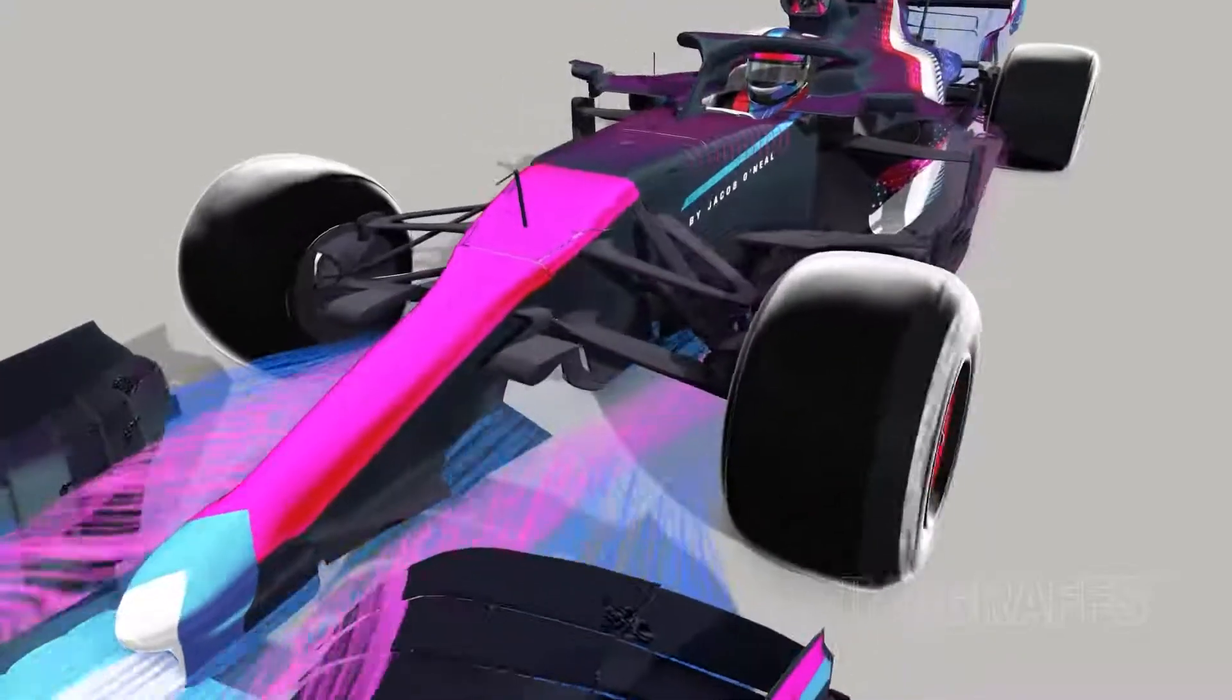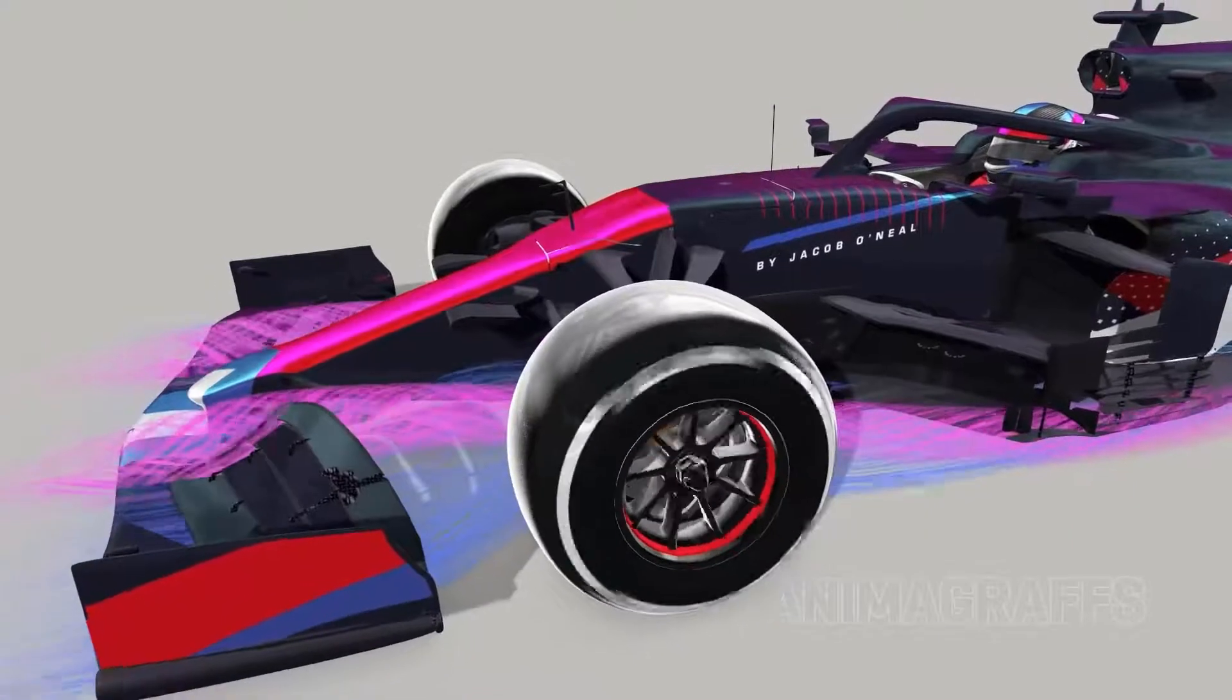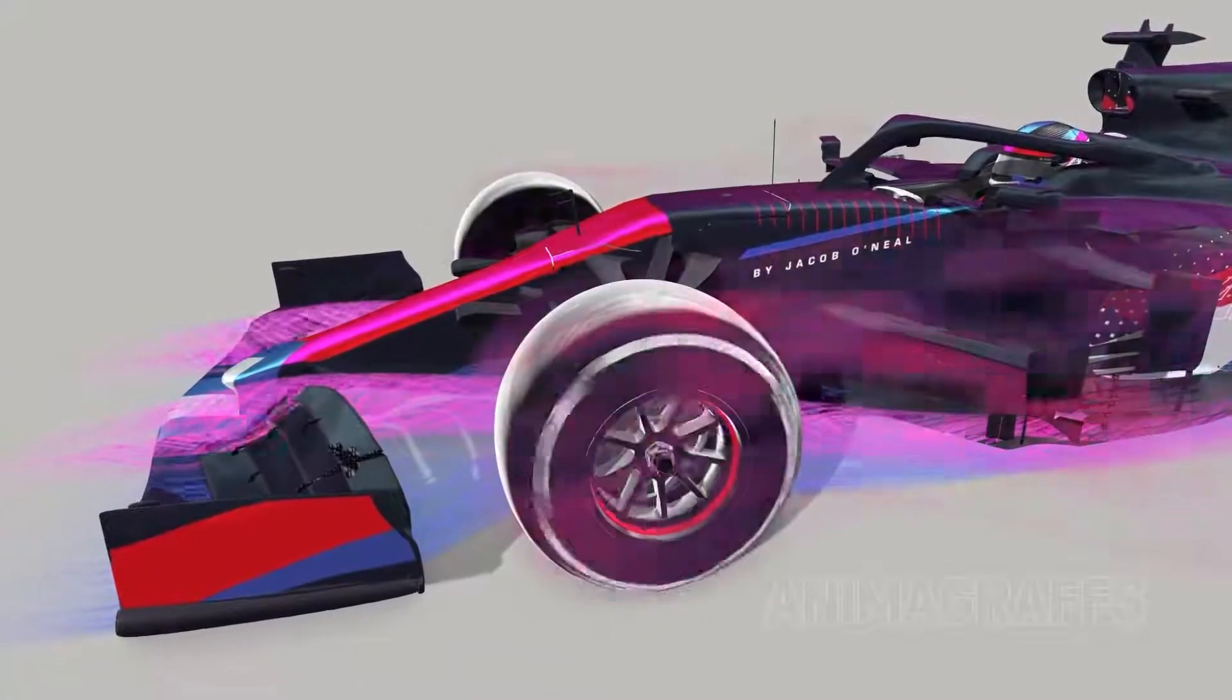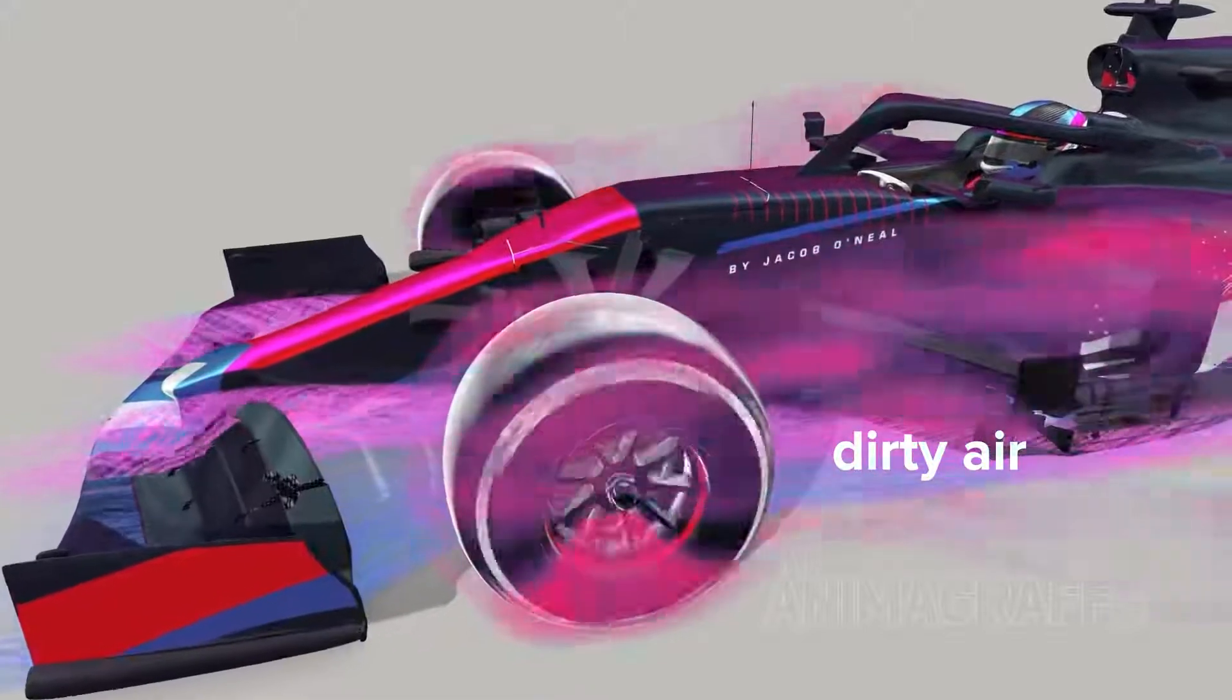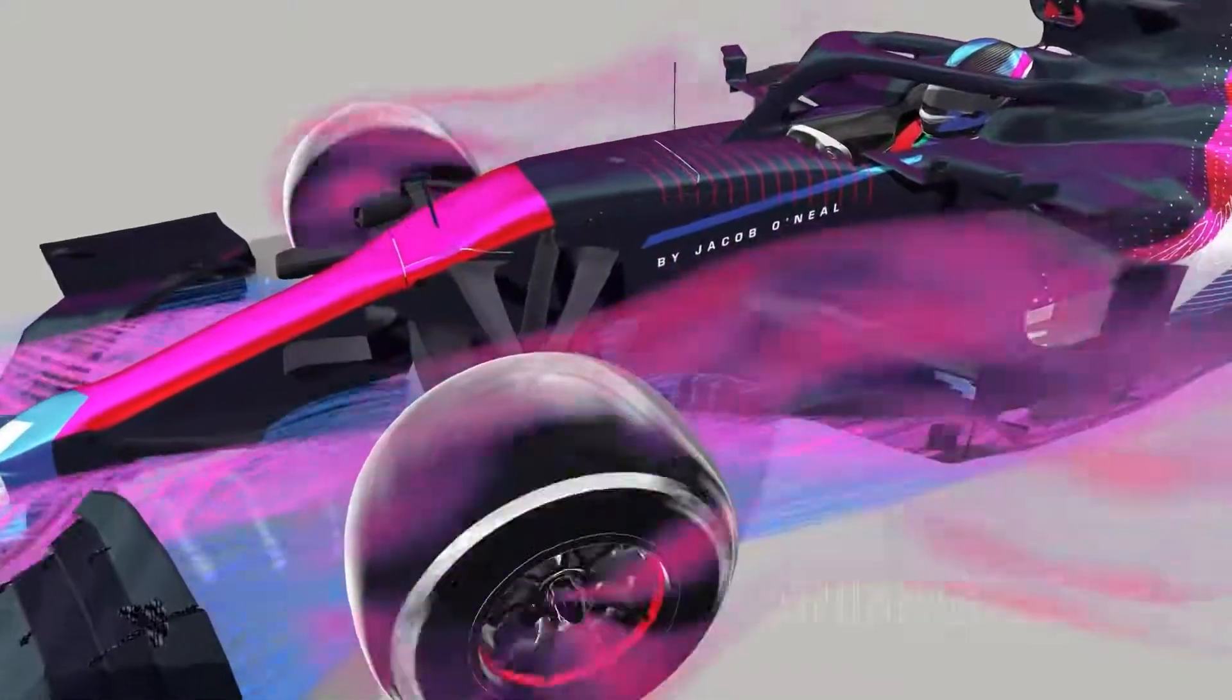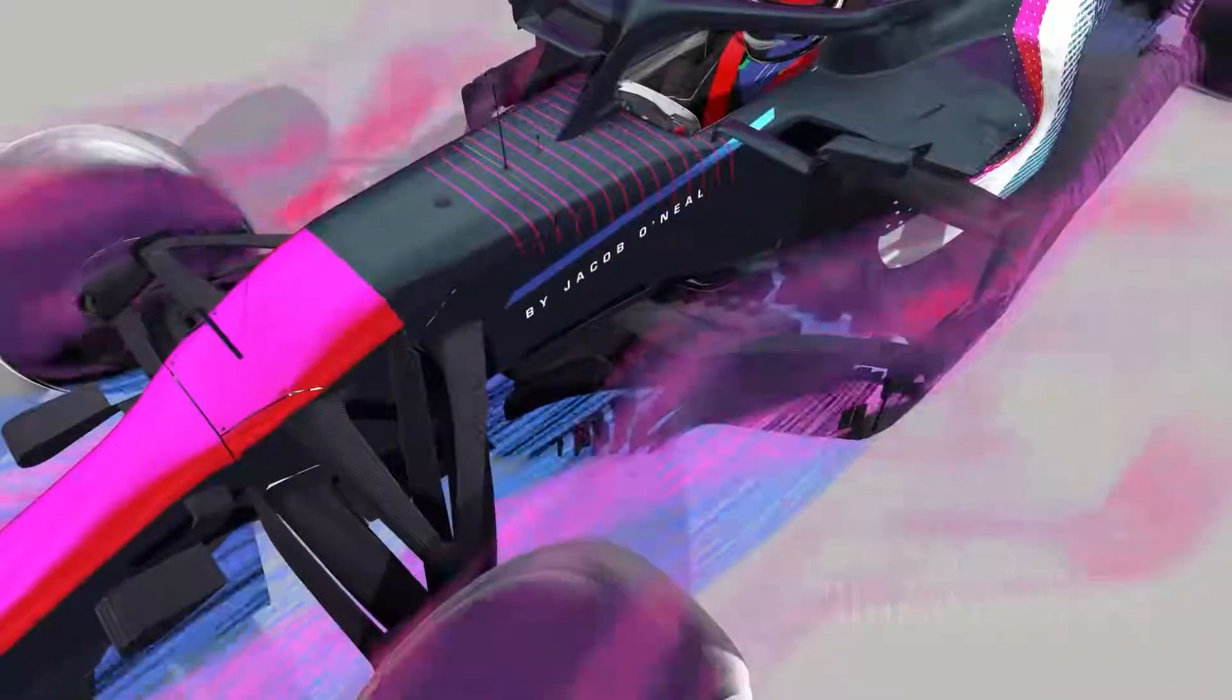As a matter of tradition, F1 cars don't have fenders, and the open, spinning wheel and tire combination is a major source of dirty, turbulent air. Turbulent air is unpredictable and not very useful for aerodynamic goals, like generating downforce.